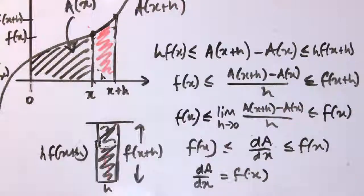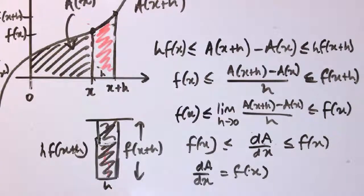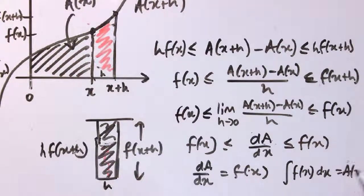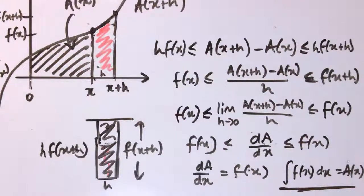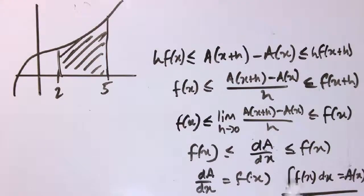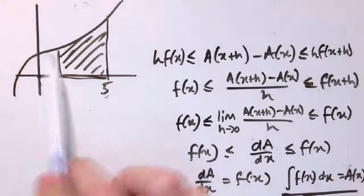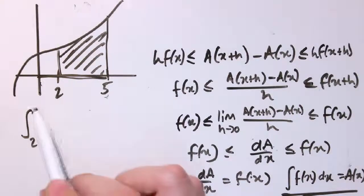Integrating this expression — finding the antiderivative — we're saying that if differentiating the area gives us the function f, then the reverse process means integrating f(x) dx gives us the area function A. This justifies the link between differentiation and integration. Going back to the previous example with limits 2 and 5: when I integrate the function I get the area-up-to function.